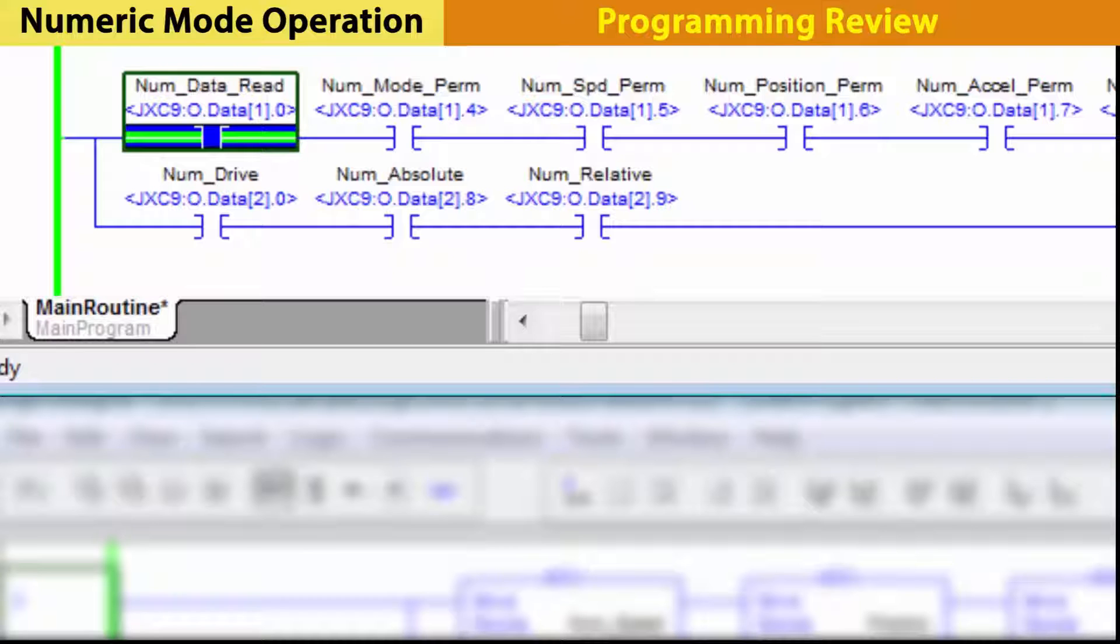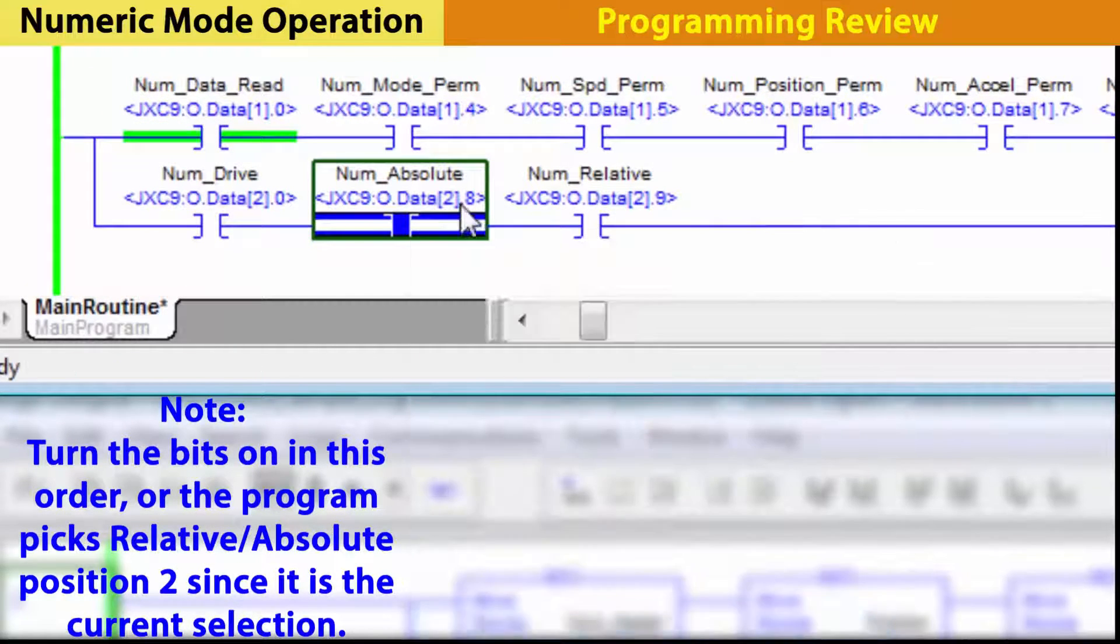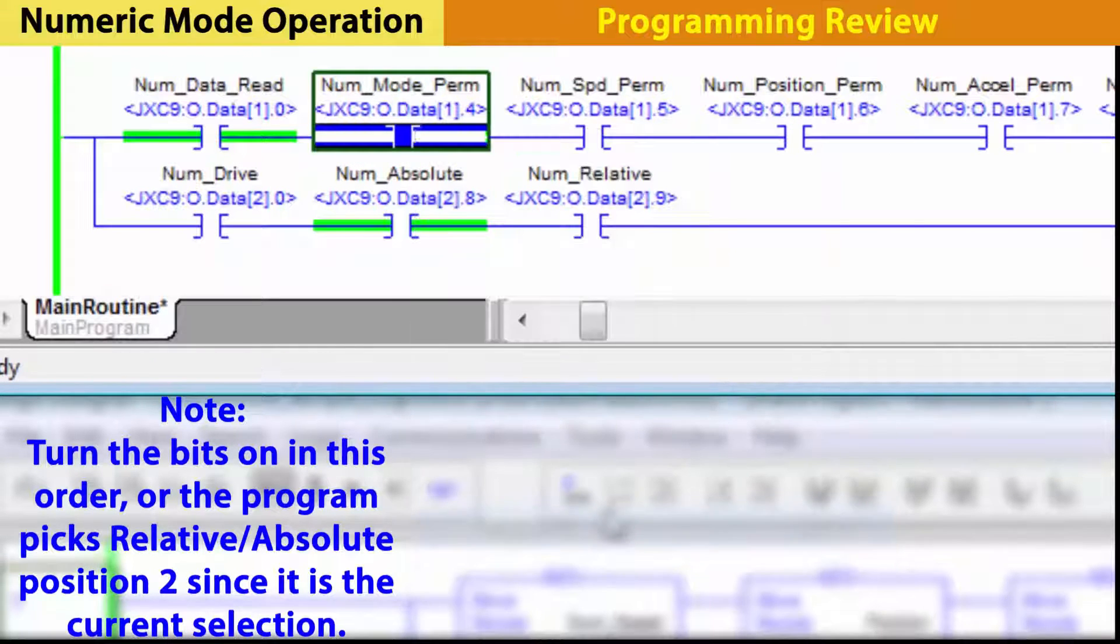Then, turn on numeric mode to set whether you want an absolute or relative move. Pick an absolute move entered like this to avoid an alarm.